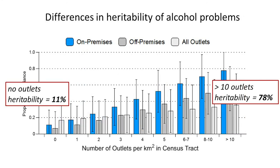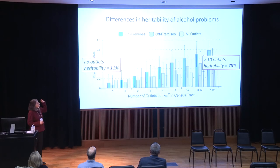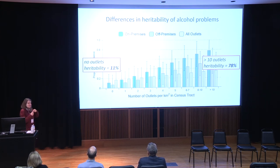Here are the results. Along the x-axis is still the number of outlets per square kilometer in the census tract, and on the y-axis is the proportion of variance in alcohol problems explained by genetic factors — the heritability — which ranges from zero to one. The kind of neighborhood you live in influences the heritability of alcohol problems. In neighborhoods with zero outlets, the heritability is 11% — not even significant. But if you live in a neighborhood with more than 10 outlets, the heritability is 78%. That's a sevenfold increase in heritability just based on environmental context.